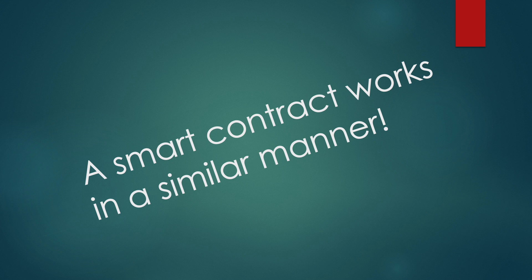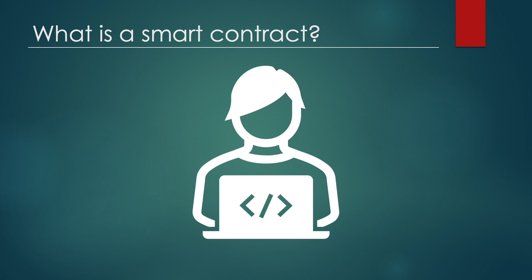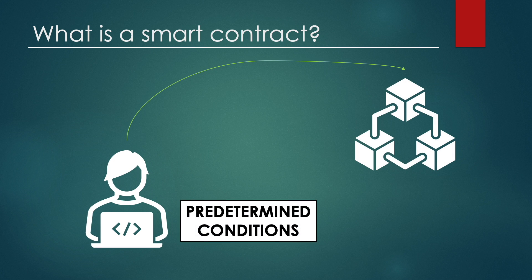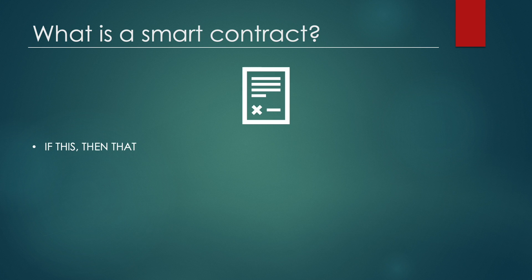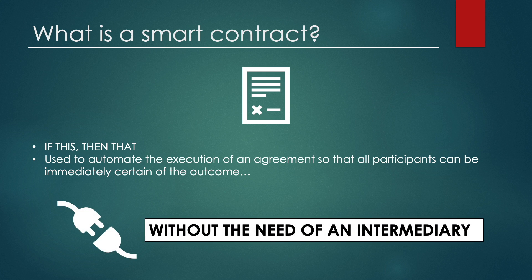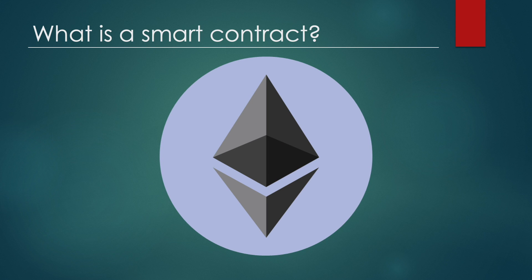A smart contract runs in a similar manner. It's just a piece of programmed code stored on the blockchain that runs automatically when predetermined conditions are met. It is often referred to as "if this then that," similar to an if statement in Microsoft Office. They are typically used to automate the execution of an agreement so that all participants can be immediately certain of the outcome, without the need of any intermediary or time loss associated to it. The most common smart contracts can be found on the Ethereum network using Solidity, Ethereum's original coding language to write smart contracts.